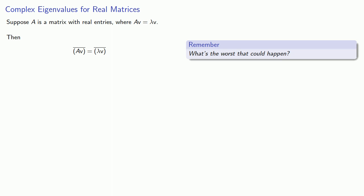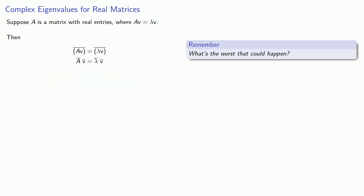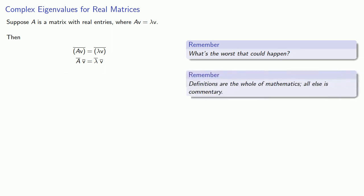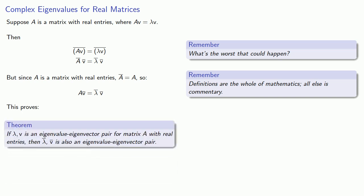The conjugate of a product is the product of the conjugates, and this also holds true for matrix multiplication. Since A is a matrix with real entries, the conjugate of A is just A itself. This proves that if lambda, V is an eigenvalue-eigenvector pair for matrix A with real entries, then the conjugates also form an eigenvalue-eigenvector pair.